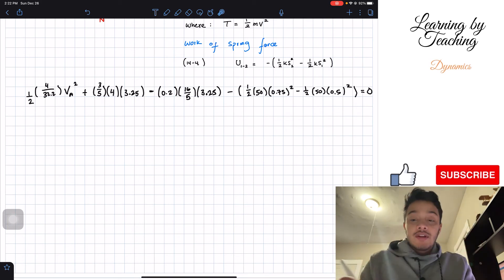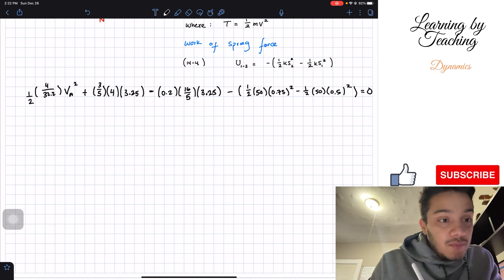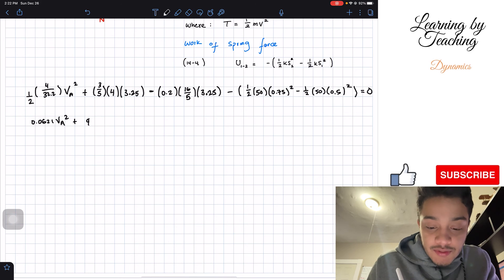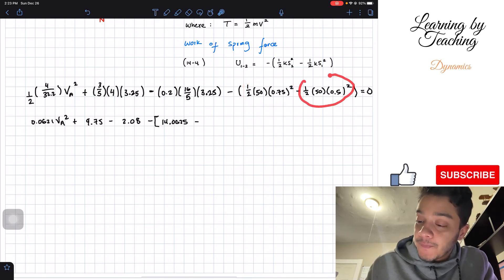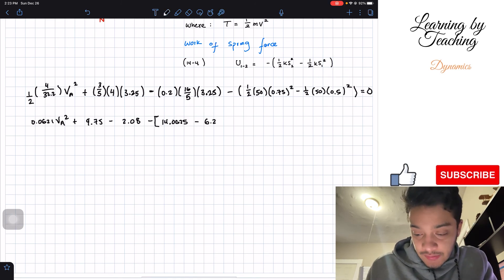Let's start by doing this 1 half 4 over 32.2. And this will give me a total of 0.0621 v_A squared. And then this other number will be equal to 9.75 minus 2.08. I'm just doing this number is that one, this one is this one. And then we're going to have minus, and then we're going to open this parenthesis. And we're going to have 14.0625 for the first multiplication group. And then we're going to have minus, and then we're going to do this second group. And that will give me a total of 6.25. We close our bracket, equal to 0.